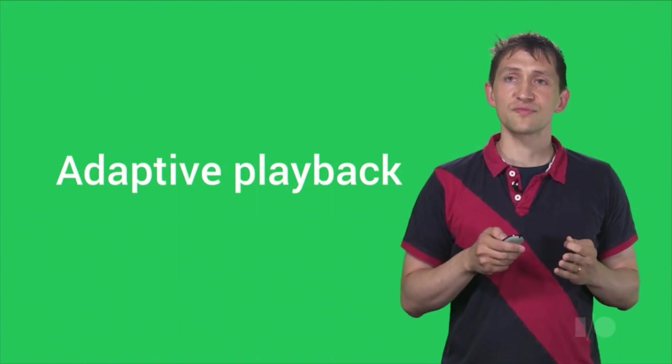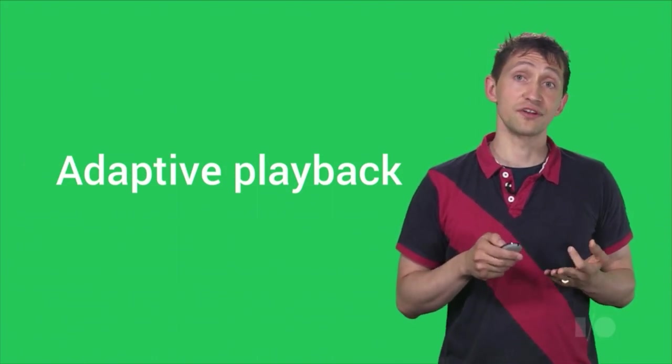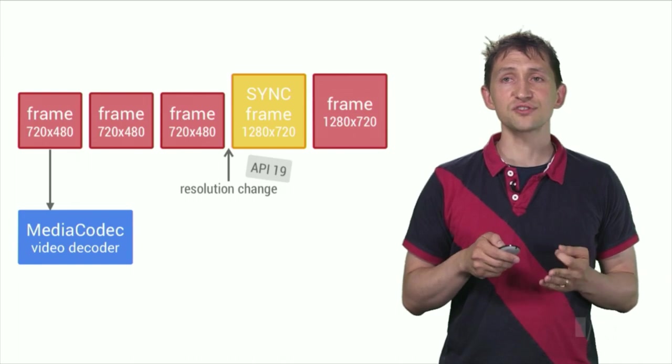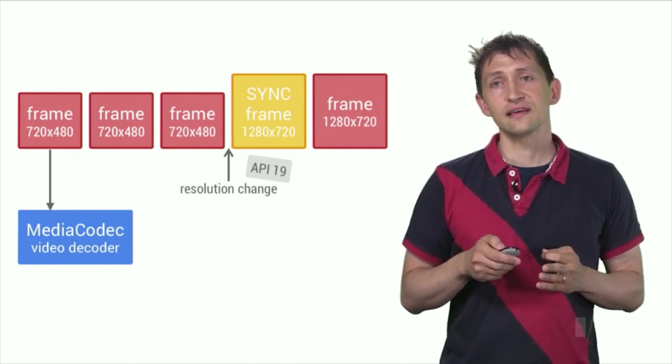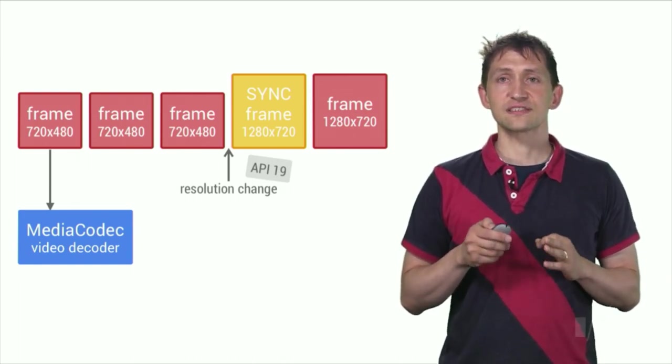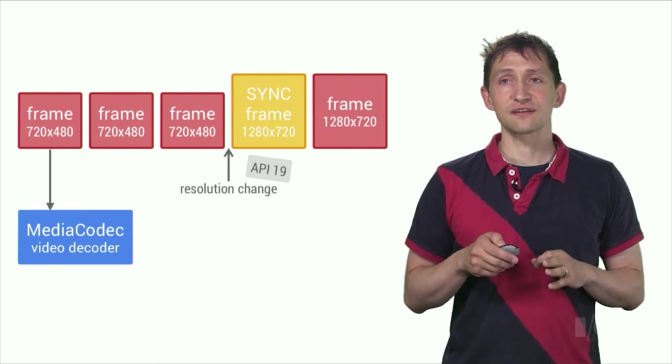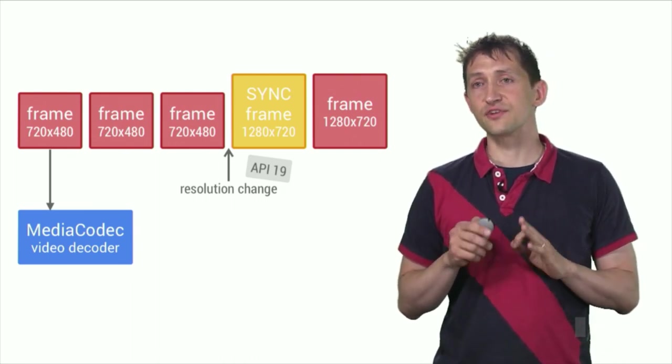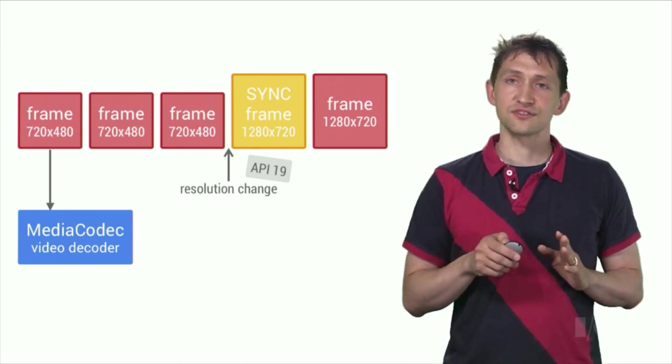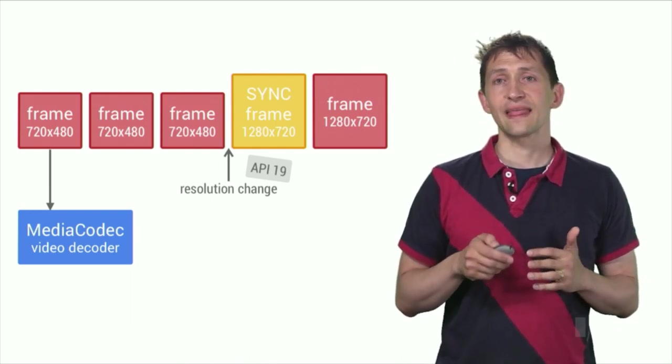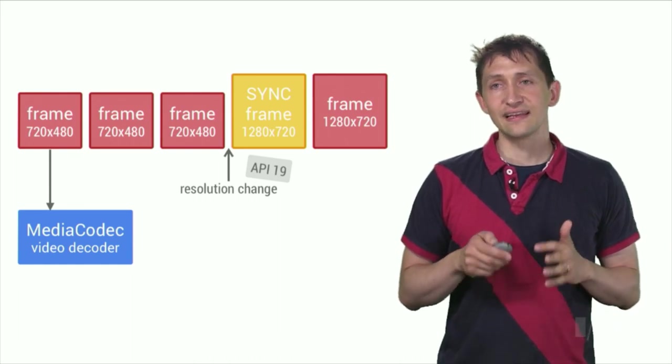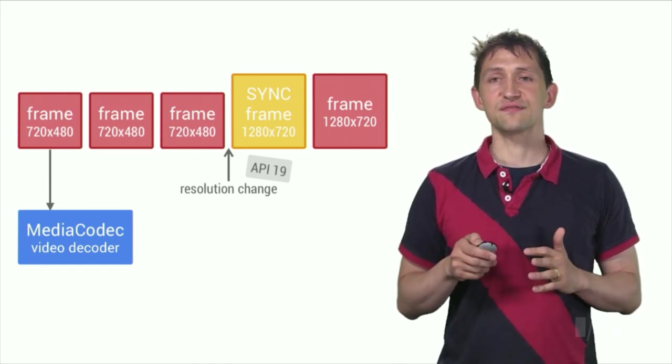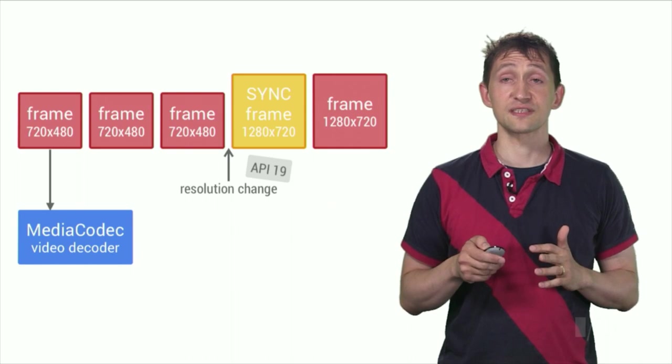Another recent improvement to MediaCodec is the support for adaptive playback. Adaptive playback is an optional feature of video decoders that enables seamless change in resolution during playback, whereas the client can start to feed the decoder input video frames of a new resolution, and the resolution of the output buffers change automatically, and without a significant gap. It is only supported if the codec is configured to use hardware-accelerated surface buffers.